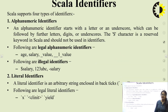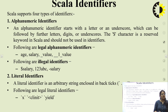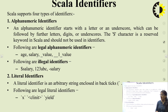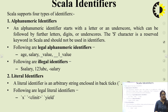Next is Scala identifiers. All Scala components require names. Names used for objects, classes, variables, and methods are called identifiers. Keywords cannot be used as identifiers, and identifiers are case sensitive. Scala supports four different types of identifiers. The first is alphanumeric identifiers. Alphanumeric identifiers start with a letter or an underscore, which can be followed by further letters, digits, or underscores. The dollar character is a reserved keyword in Scala and should not be used in an identifier.